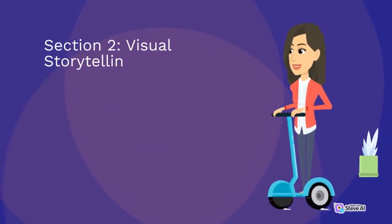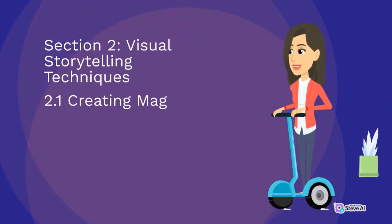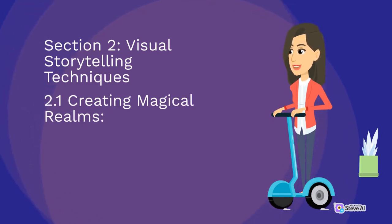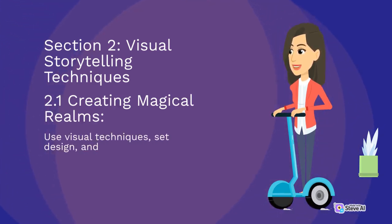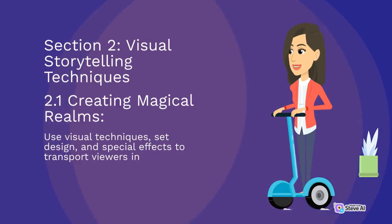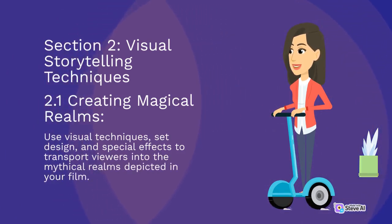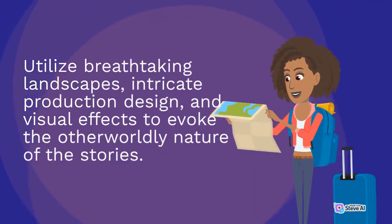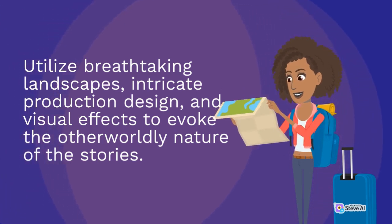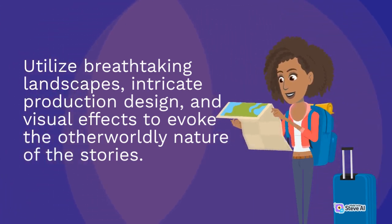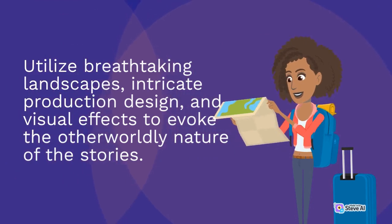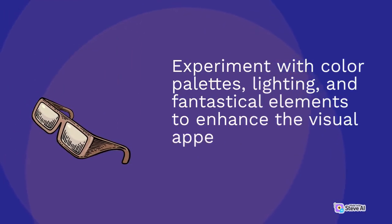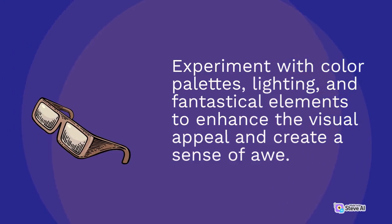Section 2: Visual Storytelling Techniques. 2.1 Creating Magical Realms. Use visual techniques, set design, and special effects to transport viewers into the mythical realms depicted in your film. Utilize breathtaking landscapes, intricate production design, and visual effects to evoke the otherworldly nature of the stories. Experiment with color palettes, lighting, and fantastical elements to enhance the visual appeal and create a sense of awe.